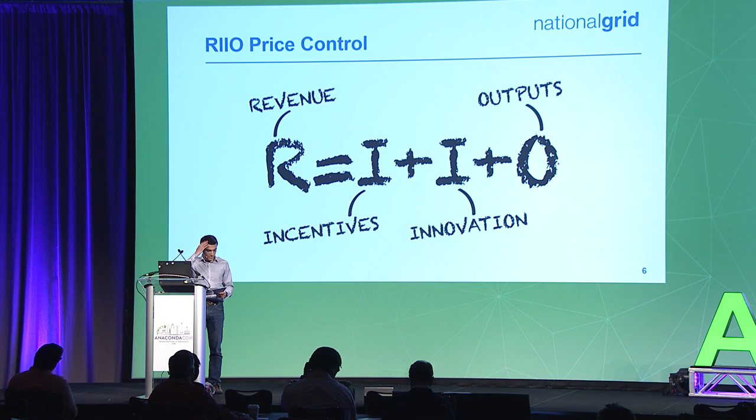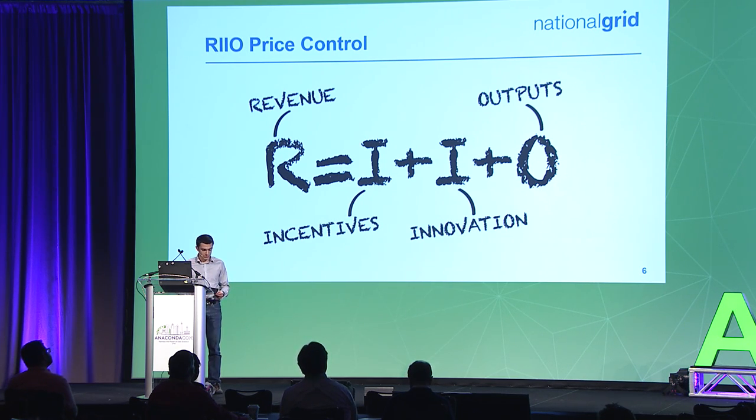A little bit more about the price control outputs — there are five categories: safety, reliability, environmental impact, customer satisfaction, and customer connections. We consider we have a world-class safety record; we are world leaders in that, and the reliability is world-class as well. So it's in our best interest to maintain that record.